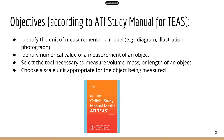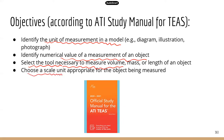Here are the objectives from the ATI. You need to be able to identify the unit of measurement in the model — for example, there might be a diagram, illustration, or photograph given to you and you need to identify the unit of measurement. You also need to be able to identify the numerical value of a measurement of an object, so I will have some practice problems on that. Next, select the tool necessary to measure volume, mass, and length of an object. And last, choose a scale unit appropriate for the object to be measured — ATI will give you some kind of measurement and you need to select a unit that's appropriate.